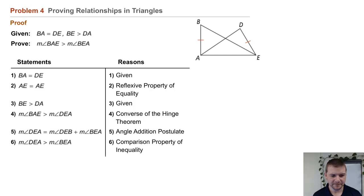Statement 6: the measure of angle DEA is greater than the measure of angle BEA by the comparison property of inequality. Finally, statement 7: the measure of angle BAE is greater than the measure of angle BEA by the transitive property of inequality.